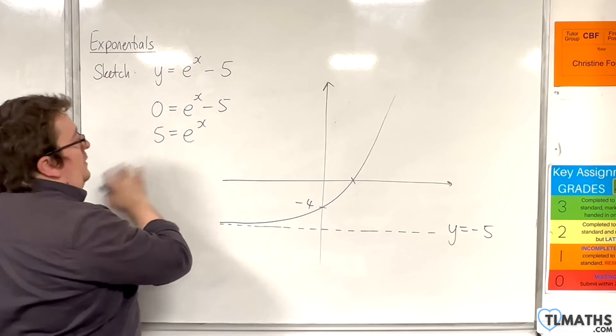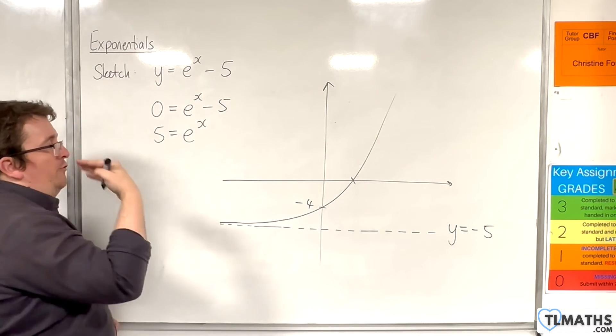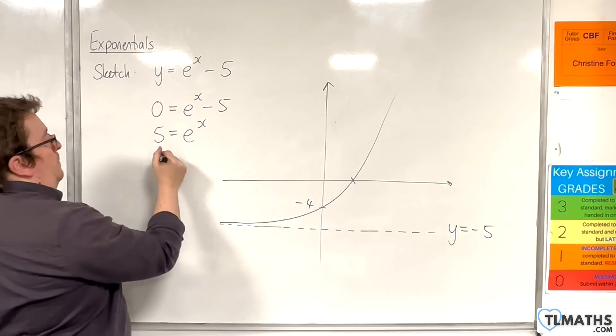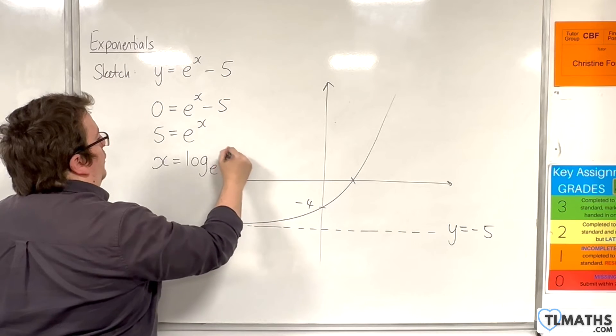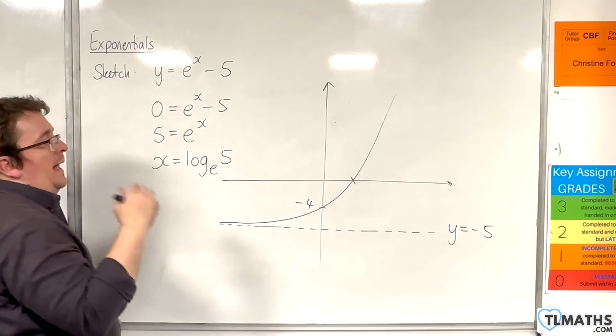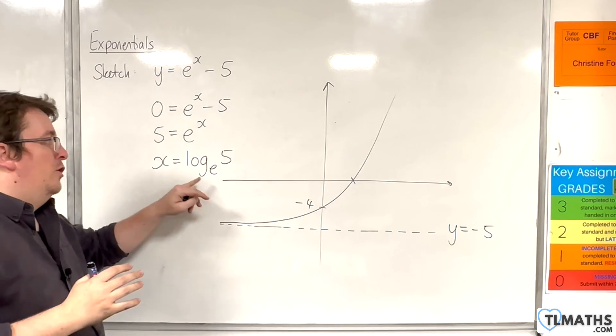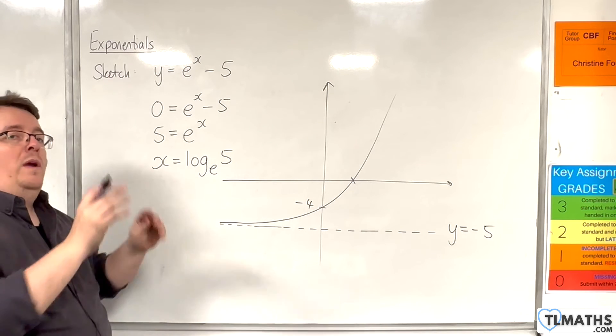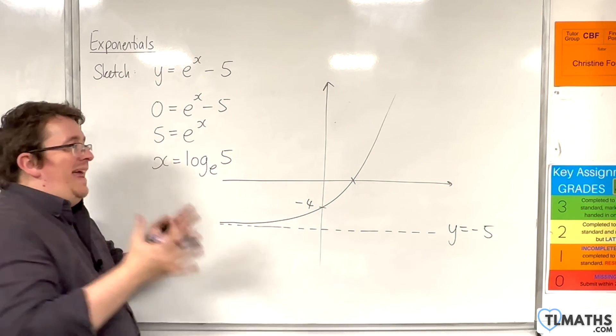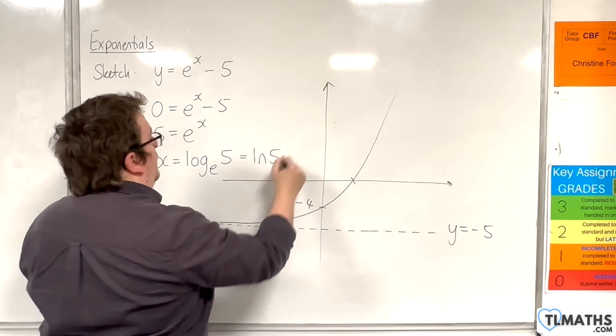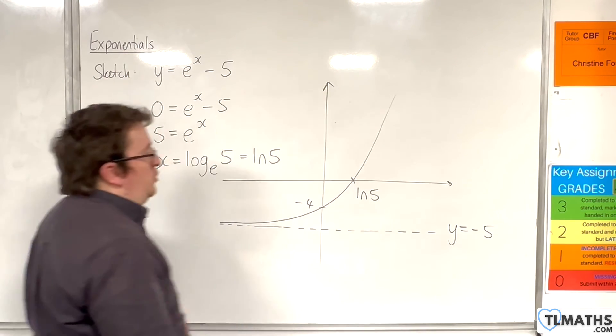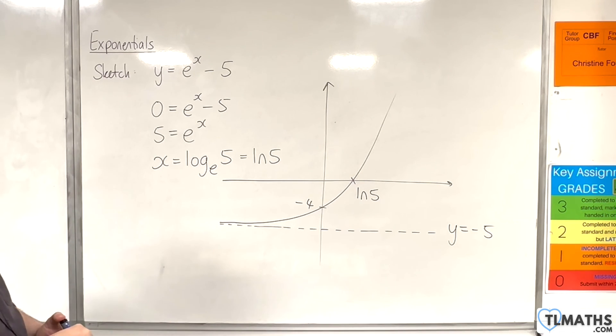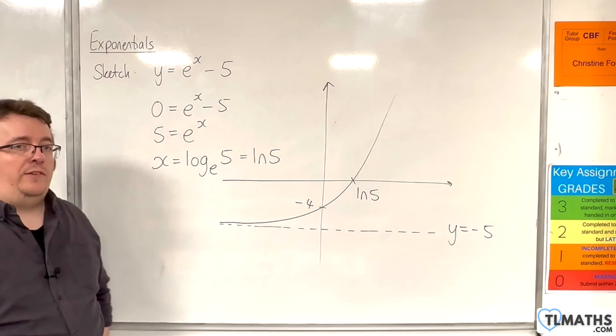Now what we're used to doing here is converting from exponential form to logarithmic form, so x would be log base e of 5. And of course log base e, we utilize the notation ln, so this is ln of 5. And so that gets its special notation, and so that is where it crosses the x-axis.